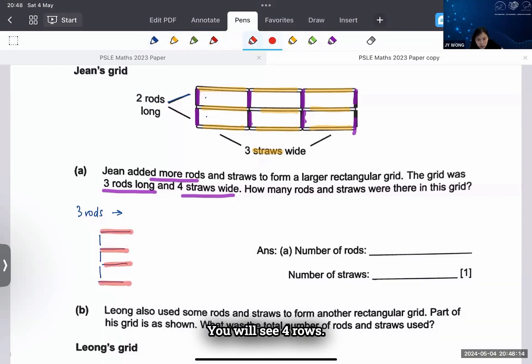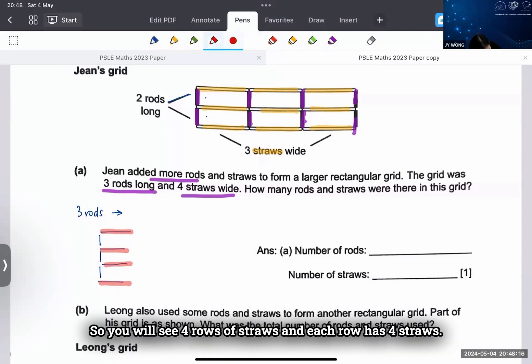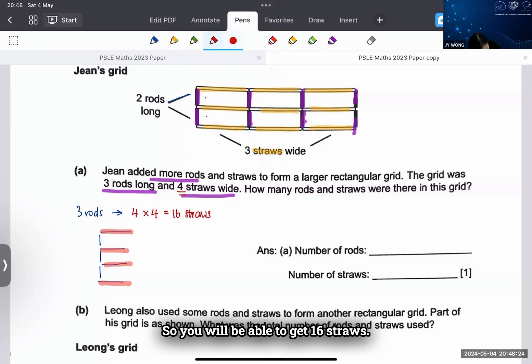And each row has 4 straws, so you will be able to get 16 straws. Okay, how about rods? So the only way is to really draw it out. You notice that for rods, right...